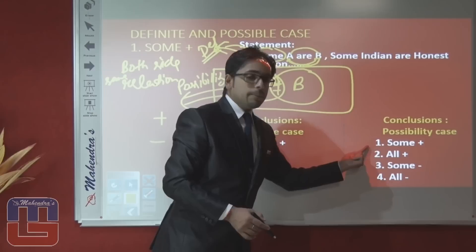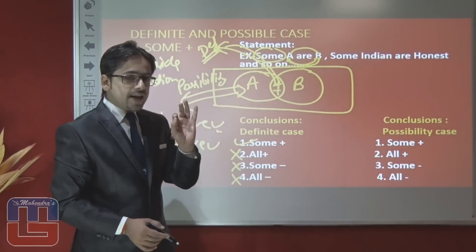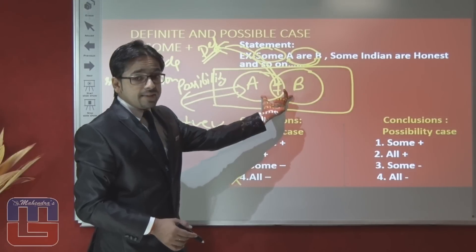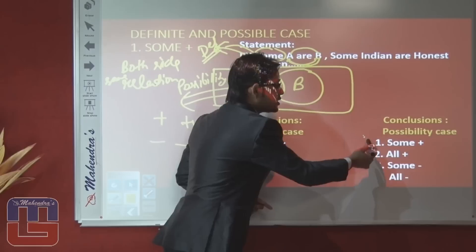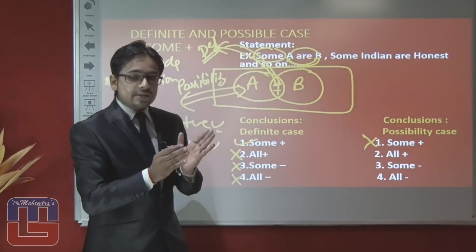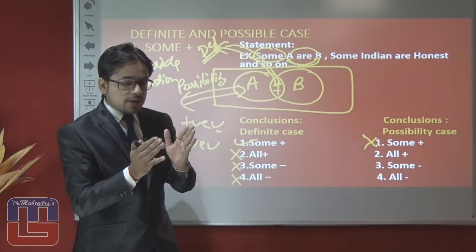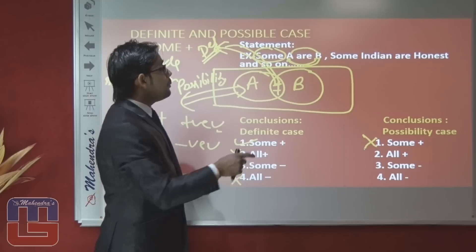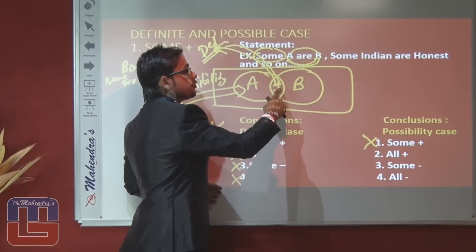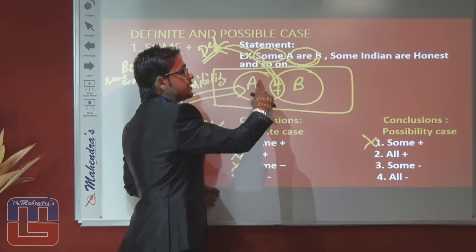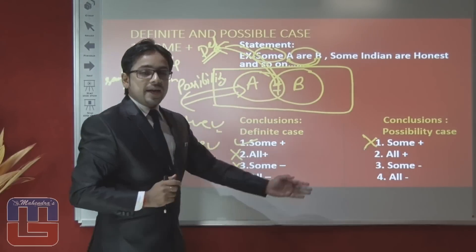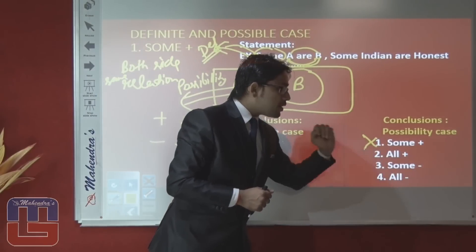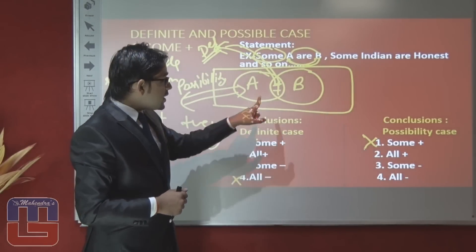Now let's look at possibility. 'Some A are B is a possibility' — this is false because it is already definite. 'All A can be B is a possibility' — we already have some positive information; if the rest of the part also goes positive then all of the circle is positive, so this is true. Similarly 'all B can be A is a possibility' is also true.